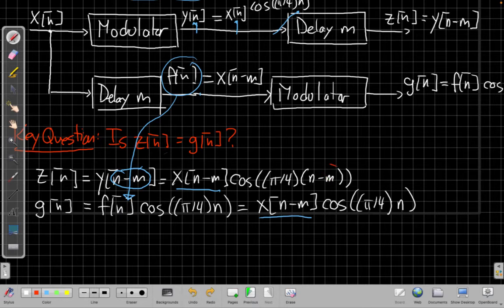Because this is not the same as that. Right if we look at this, if I draw your attention here, the z has a delay inside the cosine that the g doesn't have.